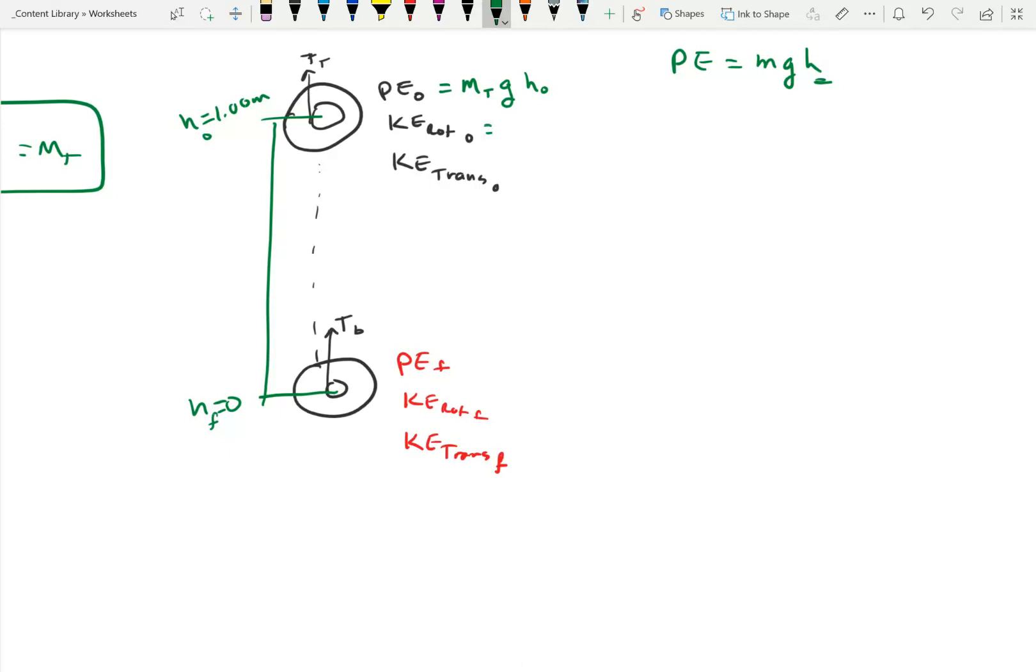First things first, potential energy. Potential energy, the equation we learned for gravitational potential energy is MGH, where H is defined from some arbitrary reference point. So, to make life easy, I'm going to choose this as H equals 0. And up here, we have H equals 1.00 meters. How do I know that is 1.00 meters? Because the string was 1 meter long. So, when the string is completely unwound, it's dropped 1 meter. So, that means the potential energy initial is the mass total times G times H initial. So, the problem does specify that you drop it from rest. If you started from rest, then you have no kinetic energy, because kinetic energy is energy in motion.